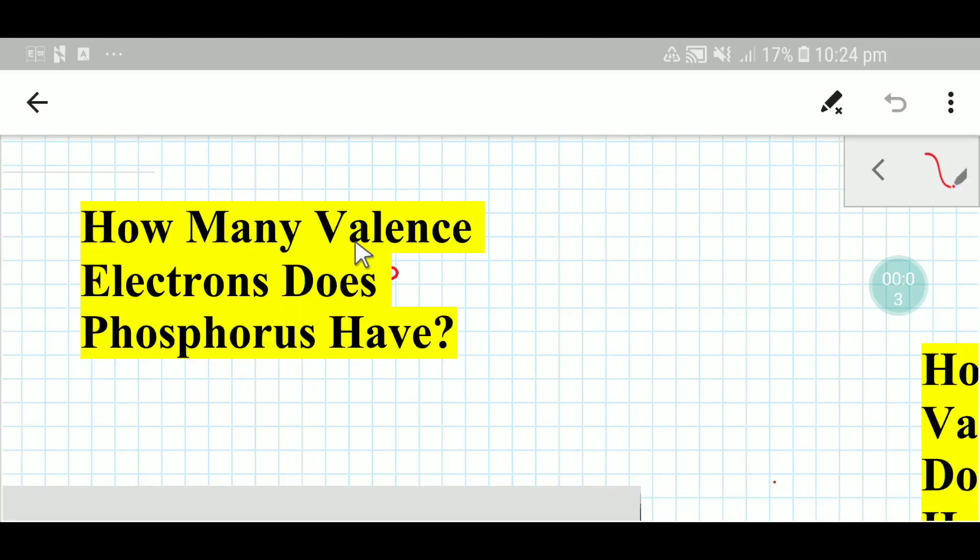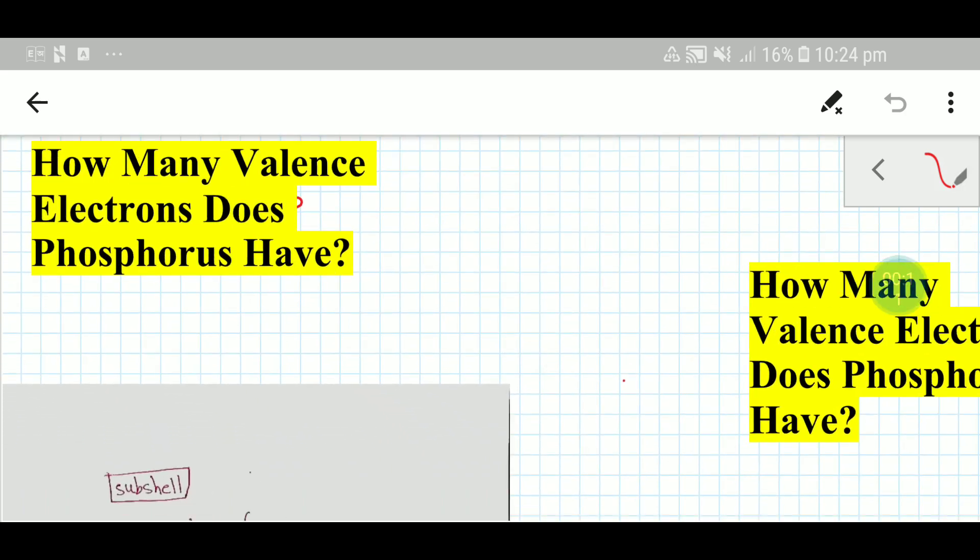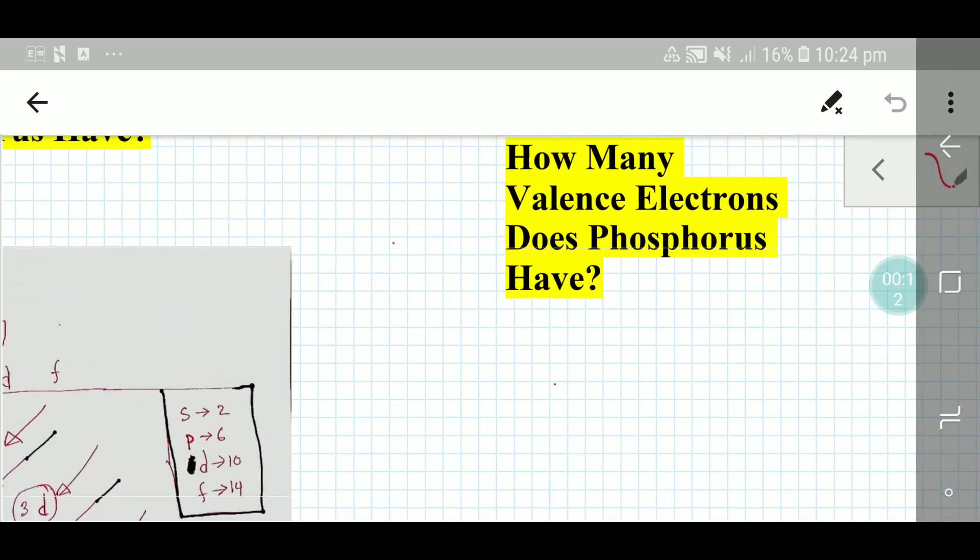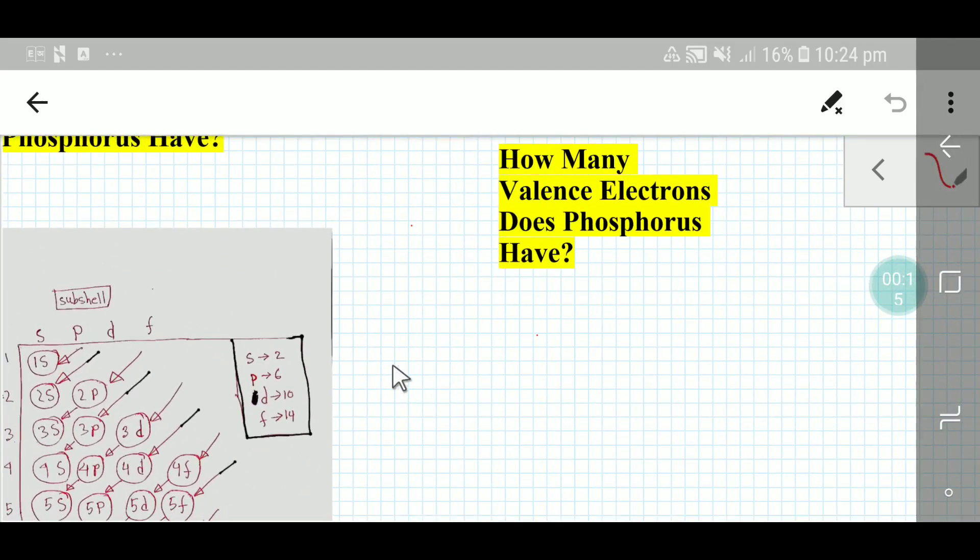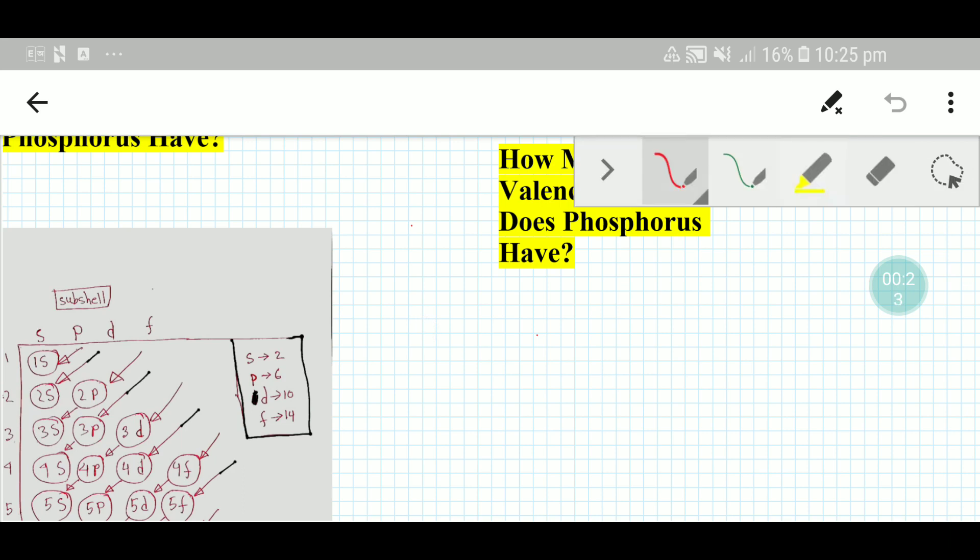Welcome to Chemistry Tutorial 360. Today we are going to find out the valence electrons of phosphorus. To find out the valence electrons of phosphorus, we need to look at the periodic table.